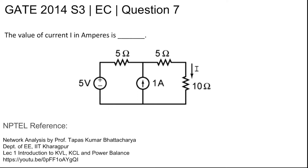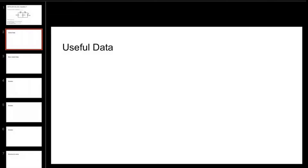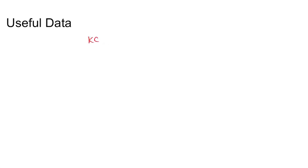This is GATE 2014 Set 3 EC Question Number 7. The value of current I in amperes is to be found. The NPTEL reference is Lecture 1: Introduction to KVL, KCL and Power Balance, from the NPTEL course Network Analysis by Professor Taposh Kumar Bhattacharjo, Department of Electrical Engineering, IIT Kharagpur.